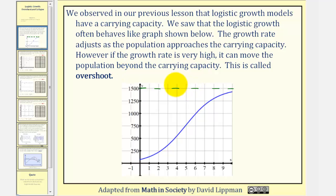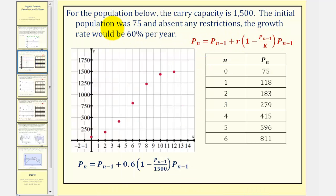Let's take a look at several examples. For the population below, the carrying capacity is 1,500. The initial population was 75, and absent restrictions, the growth rate would be 60% per year.